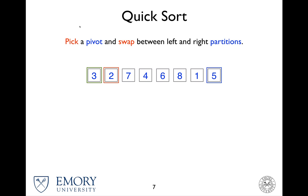There are two pointers. The red box indicates the pointer for the left partition, and the blue box indicates the pointer for the right partition. The goal is to have all the values in the left partition smaller than the pivot, and all the keys in the right partition greater than the pivot.